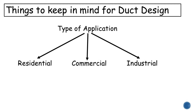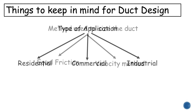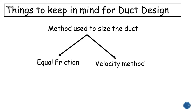First, consider what kind of application you are going to use — residential, commercial, or industrial. Next, decide what type of method you are going to use to size the duct: the equal friction method or the velocity method.